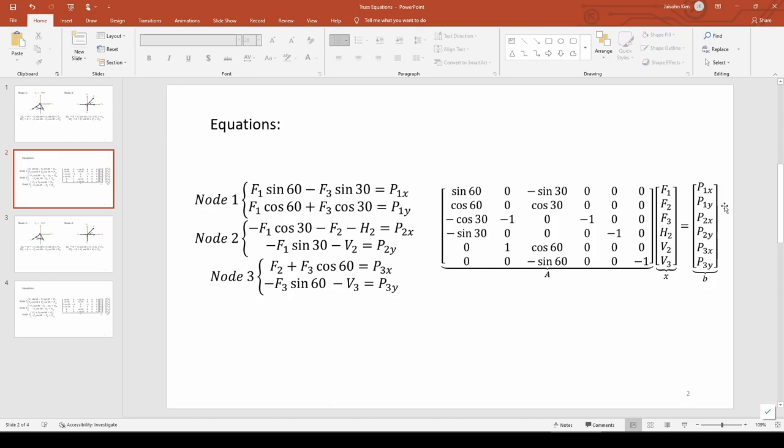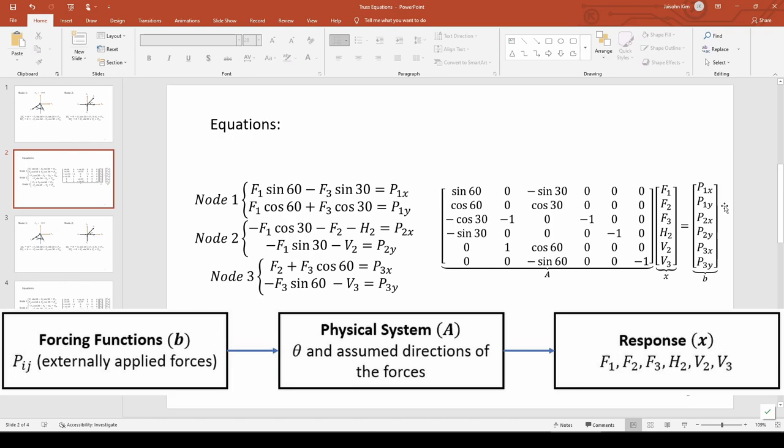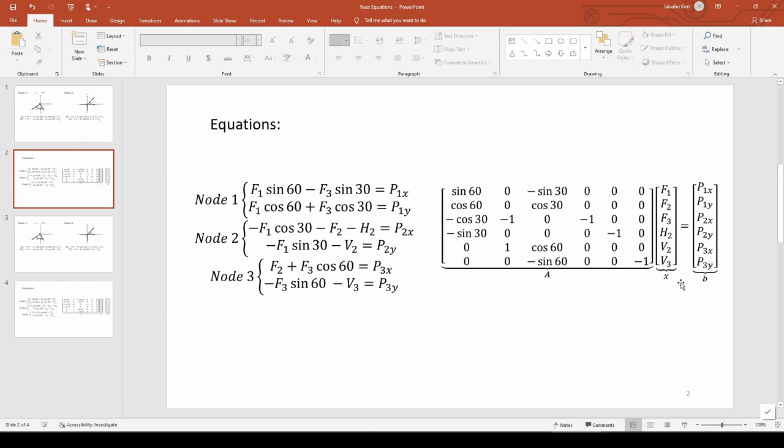Our A, X, and B matrices agree with the cause-effect diagram. The B vector contains the externally applied forces. The A matrix contains the parameters representing the truss's geometry and the assumed directions of the forces from the free body diagram, and the X vector has the 6 unknowns that we want to solve for. As usual, the next step is to implement this in MATLAB. See you next time.